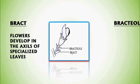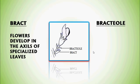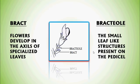Another part is the Bracteole. The small leaf-like structures present on the Pedicel are called Bracteoles. This is the Pedicel of the flower, and on this Pedicel these leaf-like structures are called Bracteoles.